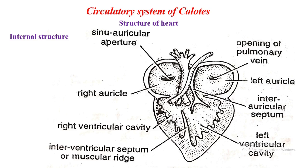However, the incomplete interauricular septum causes some mixing of oxygenated and deoxygenated blood. When the ventricle contracts forcefully, blood from the cavum pulmonale enters the pulmonary arch and is carried to the lungs for oxygenation. Blood from the cavum dorsale enters the systemic arches and is distributed to various parts of the body. This is how the working of the Calotes heart takes place.